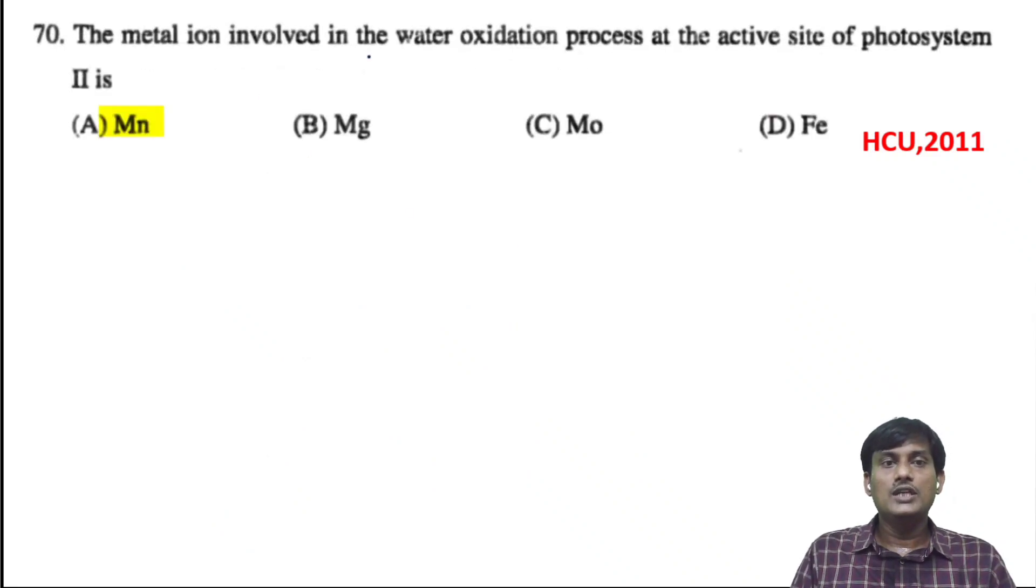The metal ion involved in the water oxidation process at the active site of photosystem II. In photosynthesis, the splitting of water takes place due to manganese. Magnesium absorbs light energy, and manganese splits water or is involved in oxidation of water. So manganese is the correct option.